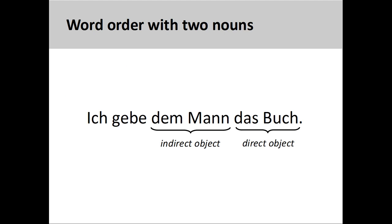In an earlier presentation I mentioned that when using both a direct and indirect object in a sentence, the indirect object will come before the direct object if both are nouns. In this sentence, ich gebe dem Mann das Buch, I give the book to the man. dem Mann is the indirect object and das Buch is the direct object.